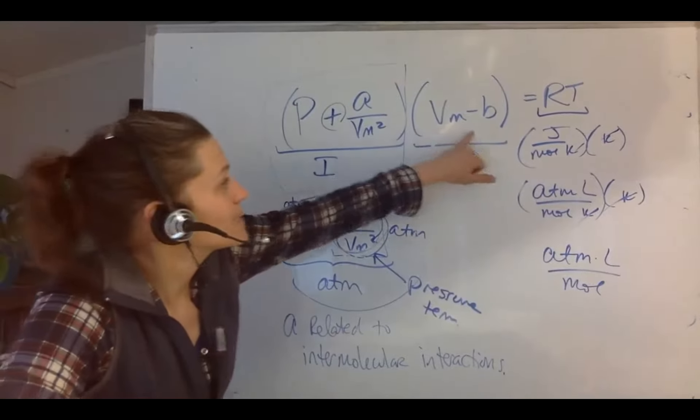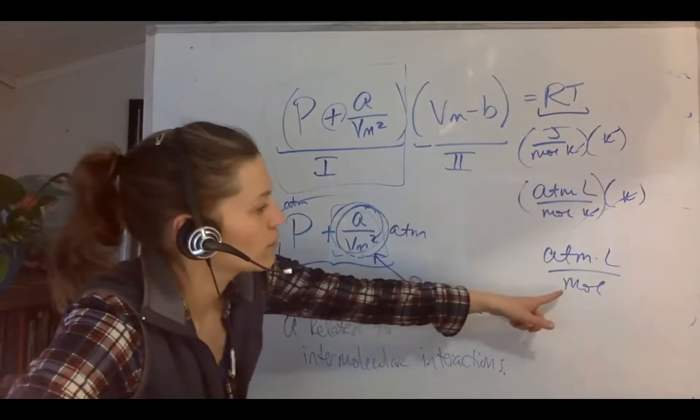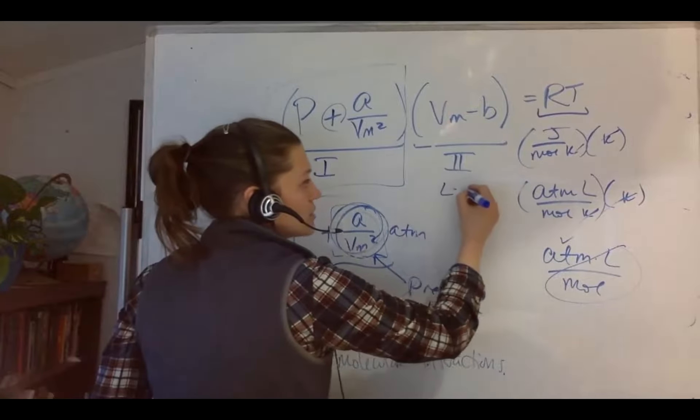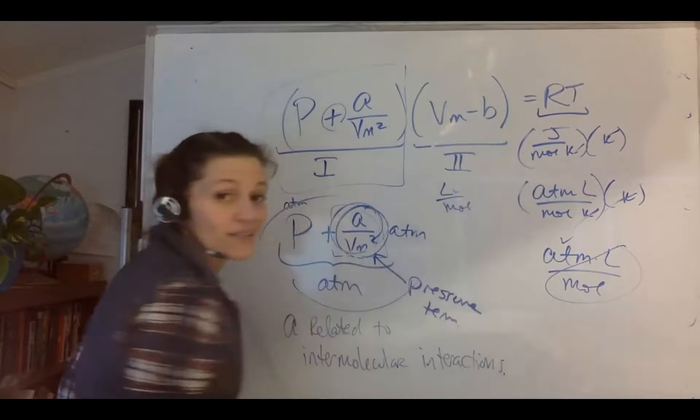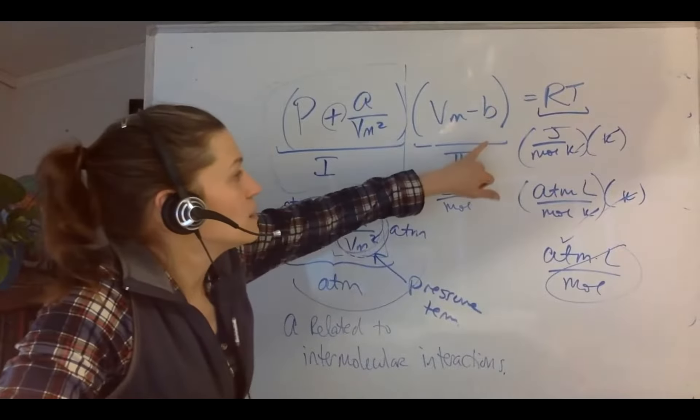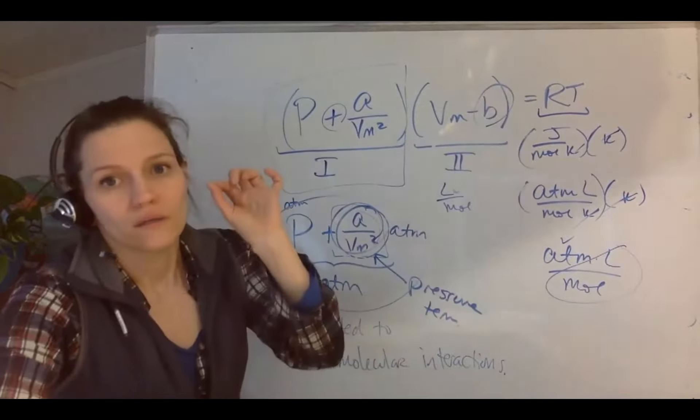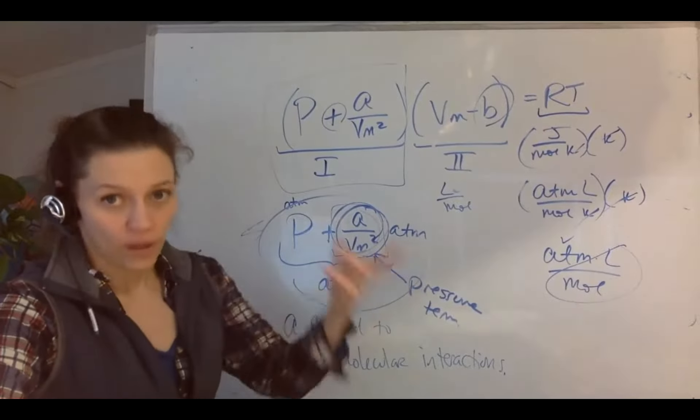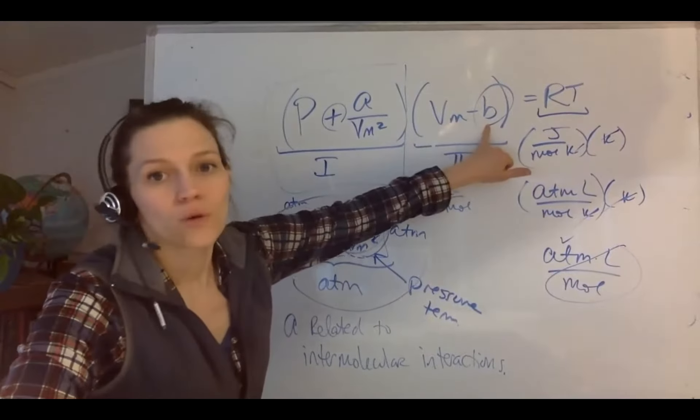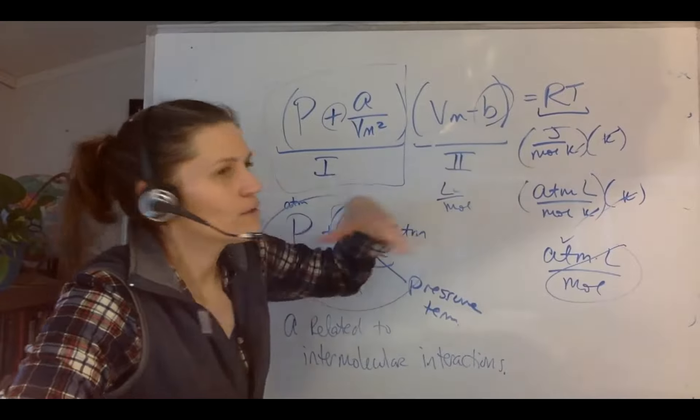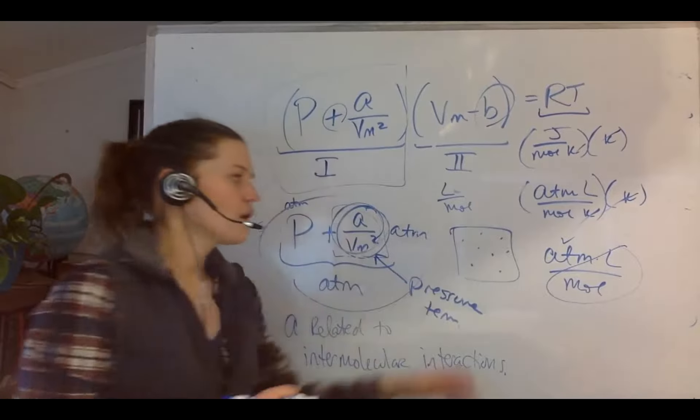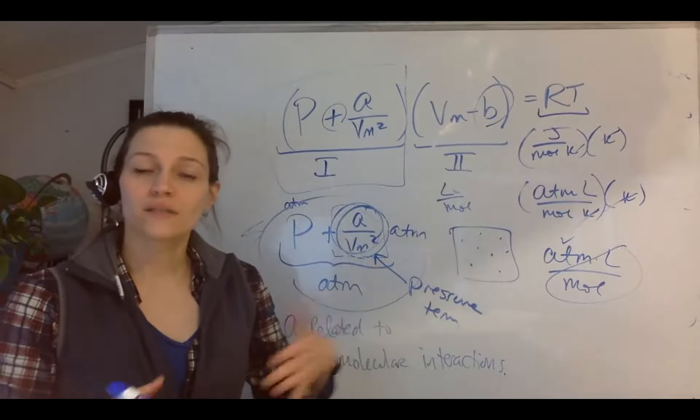So a must be related to intermolecular interactions. What would happen if a is negative or if a is zero, very small? Well that means that I am not going to have as much pressure, and therefore there's going to be more of a dominant attraction force versus repulsion. V sub m minus b is my term two. From the right hand side, atmospheres check. So that means this term two has to be liters per mole.